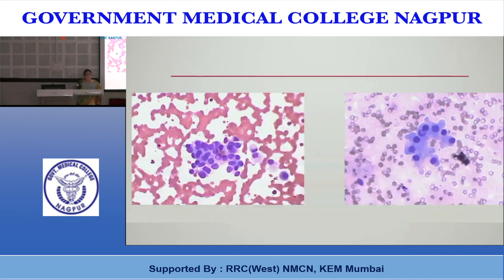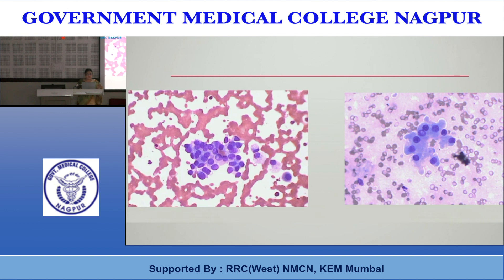Presence of rare pseudoinclusions in cyst lining cells is enough to prompt an AUS/FLUS diagnosis — they may not be profuse, but even a very classical inclusion warrants the AUS/FLUS category. However, if pseudoinclusions are accompanied by other compelling features of papillary thyroid carcinoma, the case should be considered as suspicious for malignancy.